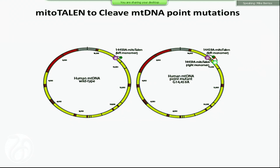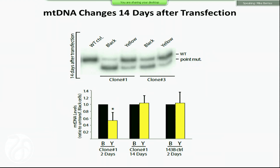The approach requires one monomer that binds to DNA present in both the wild-type and mutant, and another monomer whose TALEN-binding domain binds only the region of the mutation — not the wild-type — to make it specific. To make a long story short, the cells that received the TALEN show more wild-type and less of the point mutation. There's a decrease in total mitochondrial DNA levels immediately after treatment, but then later on, the levels come back because of copy number control.